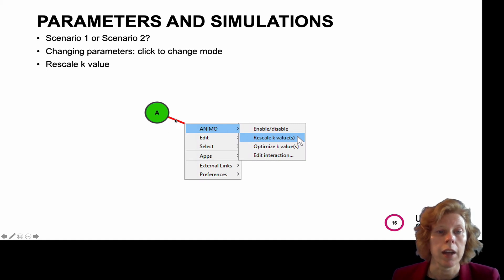If you right click on the edge and choose Animo, you can also rescale the K values. And you can do that for one interaction or all the interactions in a complete network.